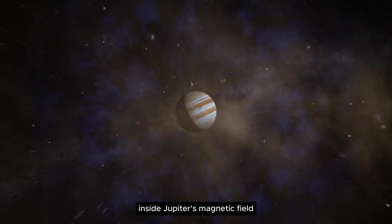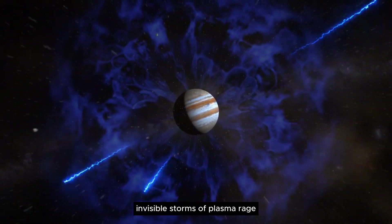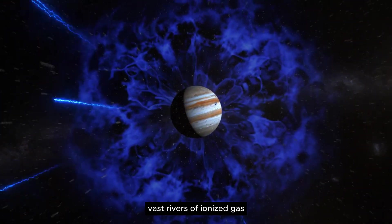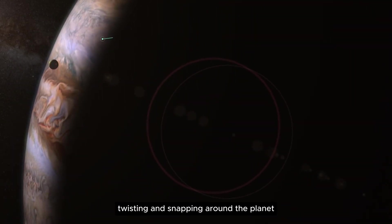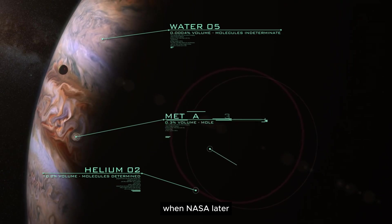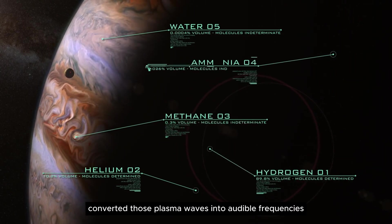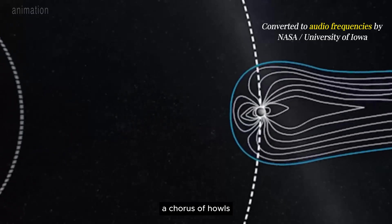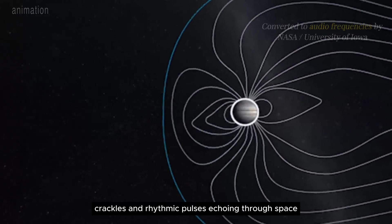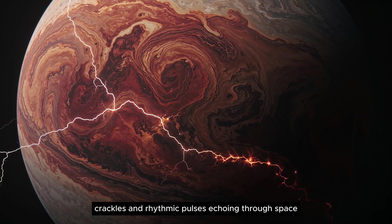Deep inside Jupiter's magnetic field, invisible storms of plasma rage. Vast rivers of ionized gas, twisting and snapping around the planet faster than sound. When NASA later converted those plasma waves into audible frequencies, what they heard was haunting. A chorus of howls, crackles, and rhythmic pulses echoing through space.